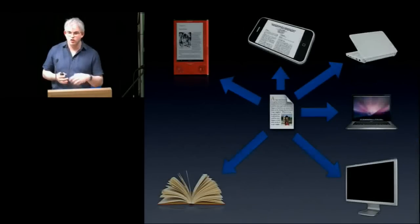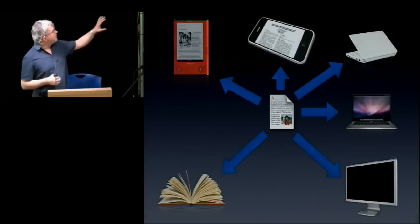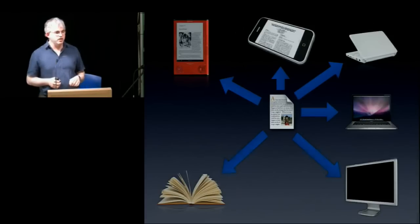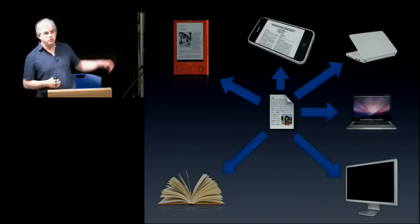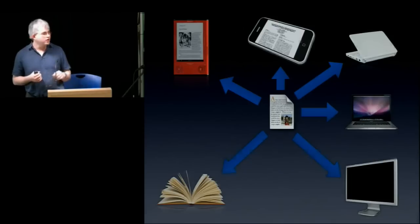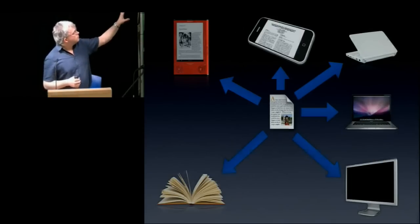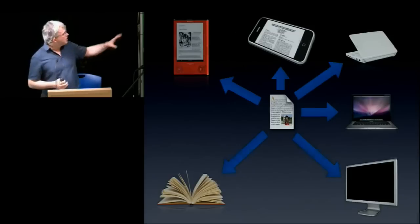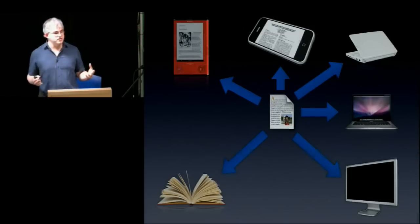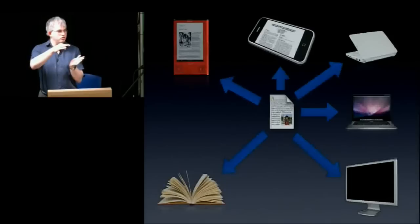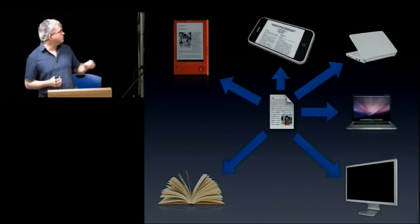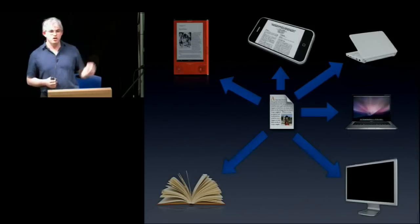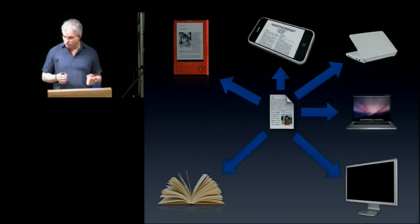These days we don't just consume documents on one device in one fixed presentation. We may take a document and view it on an e-book reader, a mobile device, a range of different computers, and we'll still print it on paper. All these devices have very different display characteristics. The laptop and desktop are similar, but a netbook often has a much truncated screen, and e-book readers and mobile devices have much smaller screens that can't contain as much as paper or a computer desktop.